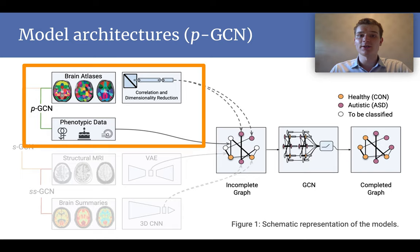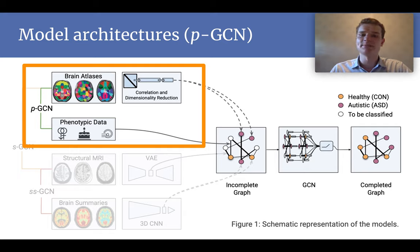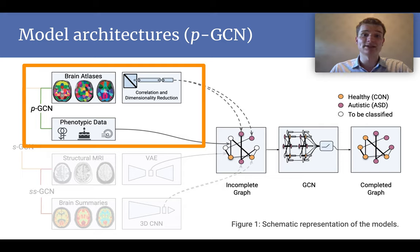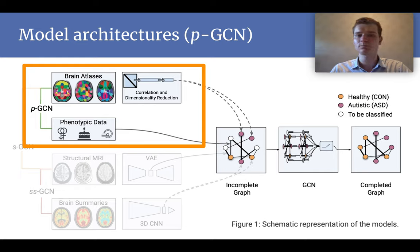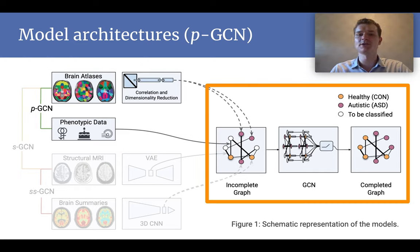Another aspect is that the edges of the graph are based on similarities between subjects. This is based on metadata such as age, gender, and acquisition sites. Now we have the edges based on similar metadata, and the vertices or nodes based on the feature vectors of the fMRI data. This orange box shows the actual prediction part of the whole architecture. It is a GCN, and it remains unchanged in the different architectures.